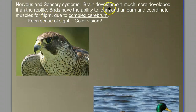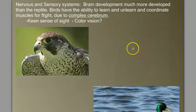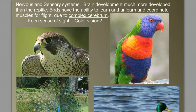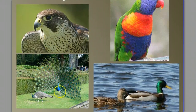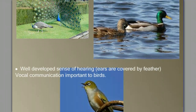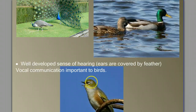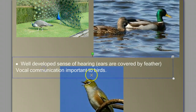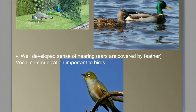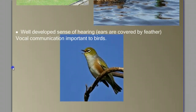Now let's move on to the nervous system and sensory systems. Birds have well-developed brains — they're smart, they can learn and unlearn, and they have to coordinate complex muscle movement. Just think about how difficult it would be to coordinate all the movements necessary for flight, and how good your sensory systems need to be. Birds have very keen eyesight and very good color vision — think about having to pick out mates based on the color of their feathers, identify which species belongs to you, or find the color of ripe fruit and berries. Birds also have a well-developed sense of hearing. You don't see the ear openings because they're covered by feathers, but birds hear and birds sing. Vocal communication is very important — specific bird songs help species identify each other and are very important for social behaviors such as mating.